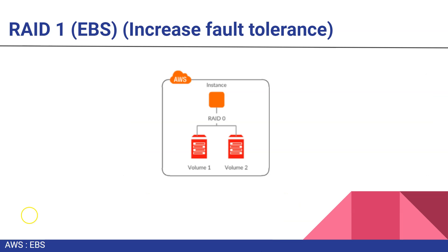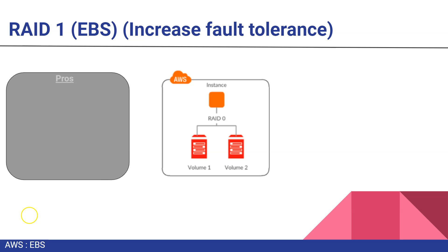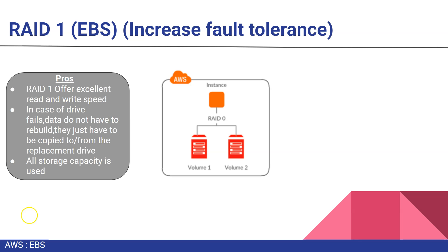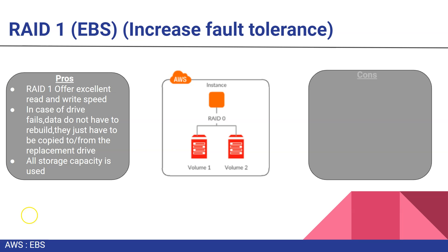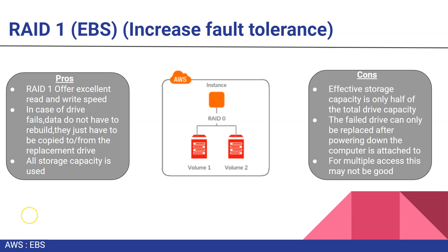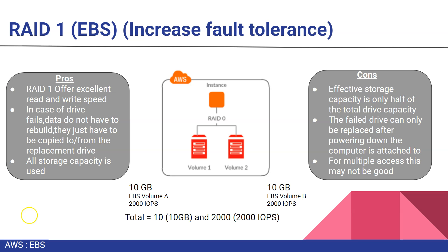For RAID 1 with EBS, it increases fault tolerance and gives high availability for your data. The pros are the same as RAID 1: excellent read and write speed, data backup always available, but storage is 50% of total capacity, and failed drives can only be replaced after powering down. In the example, each volume has 10 GB and 2000 IOPS, but in RAID 1 you get only 10 GB and 2000 IOPS - not doubled. So RAID 1 increases reliability and redundancy, while RAID 0 increases performance.